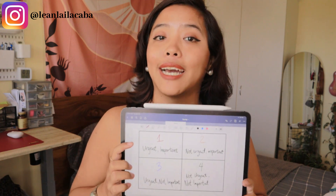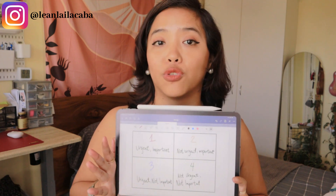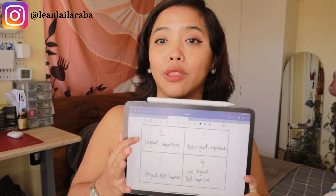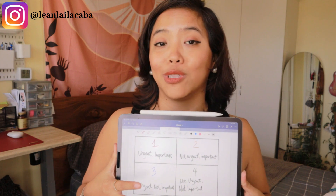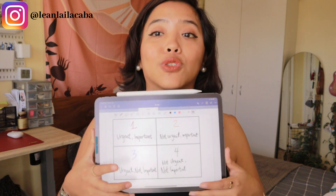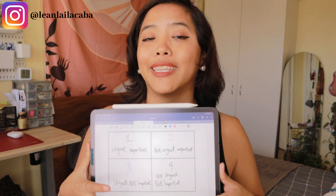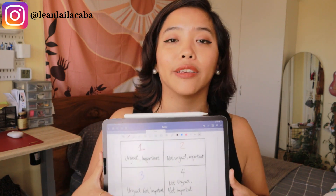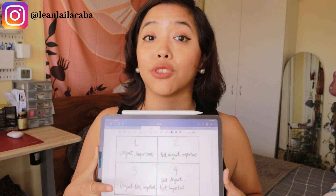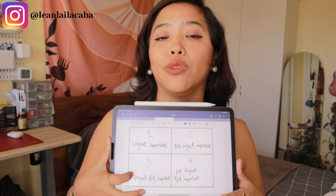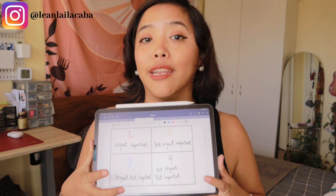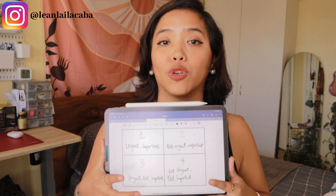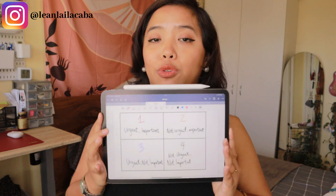The first quadrant — urgent and important — those are your priority number one tasks. Urgency depends on your context; it could mean within the next week or the next month. Number two is tasks that people often forget but are actually really important: not urgent but still important. Number three is urgent but not important — these are usually urgent for someone else but not for you, which is typically where you delegate to your assistant right away. Number four is not urgent and not important.